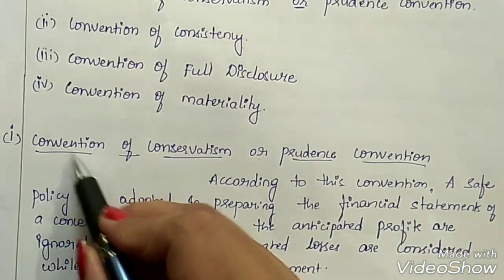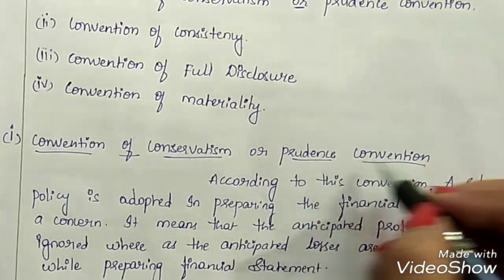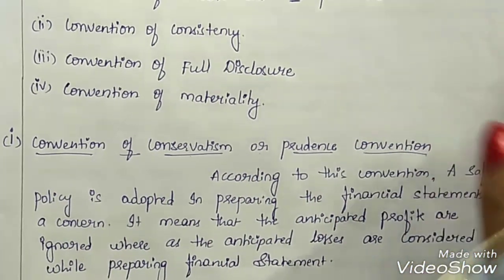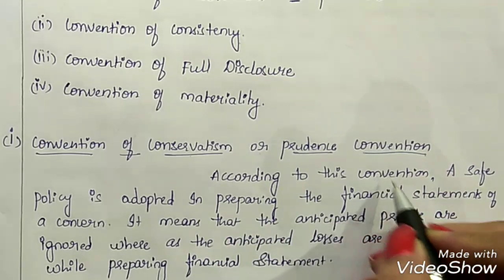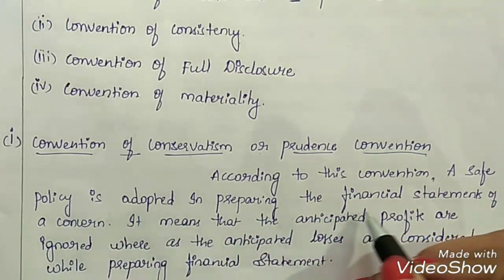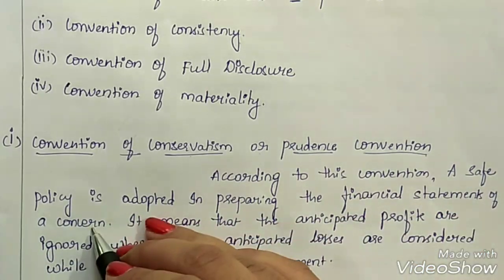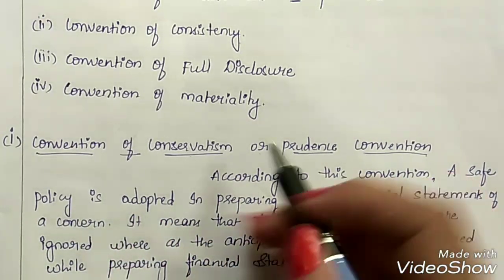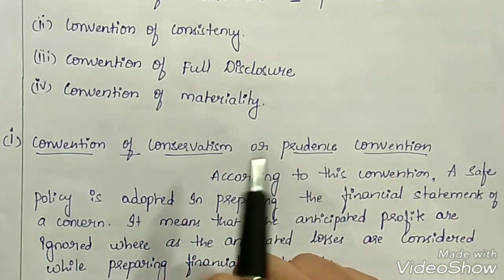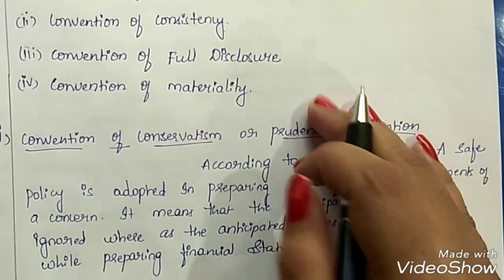First is the convention of conservatism, also known as prudence convention. According to this convention, a safe policy is adopted in preparing the financial statements of a concern. This convention is like playing a safe game — it takes various precautionary measures.